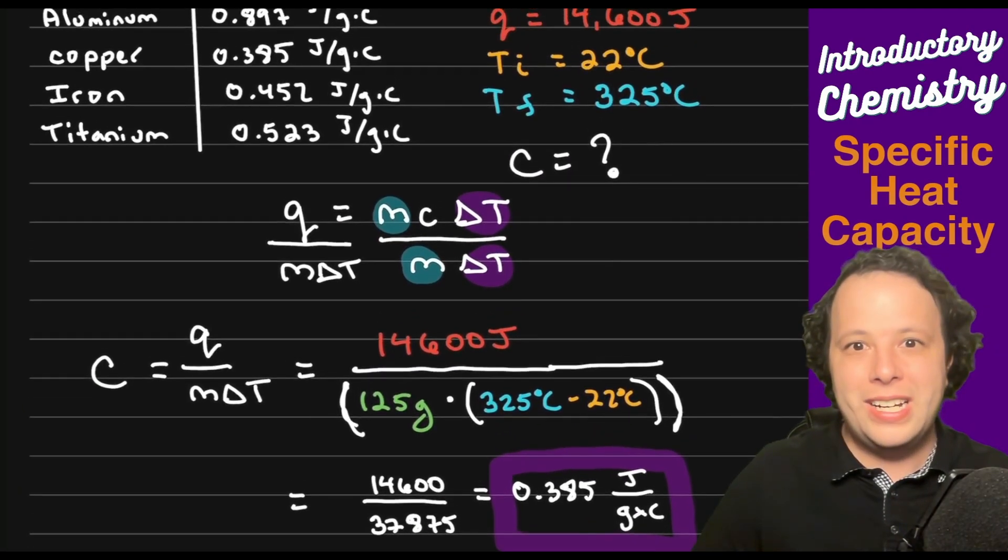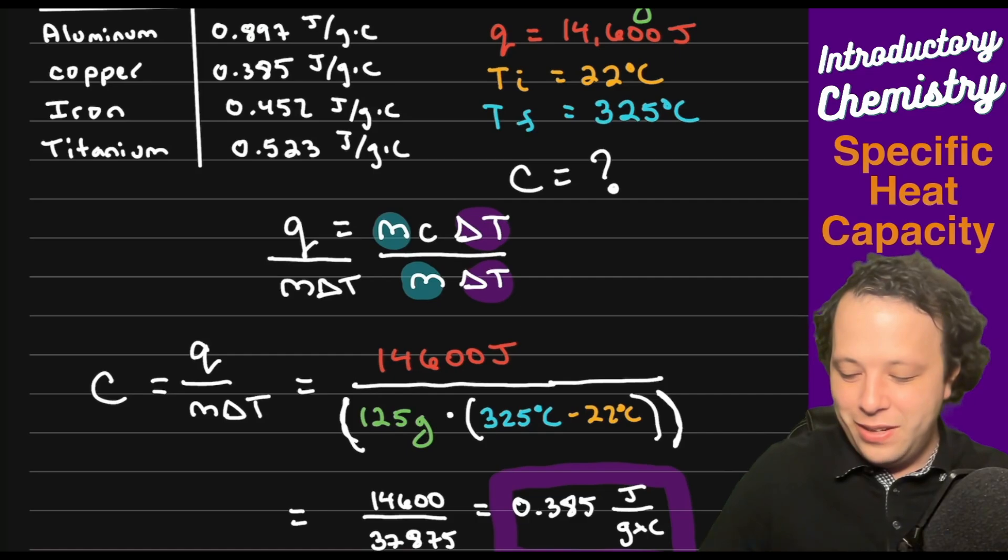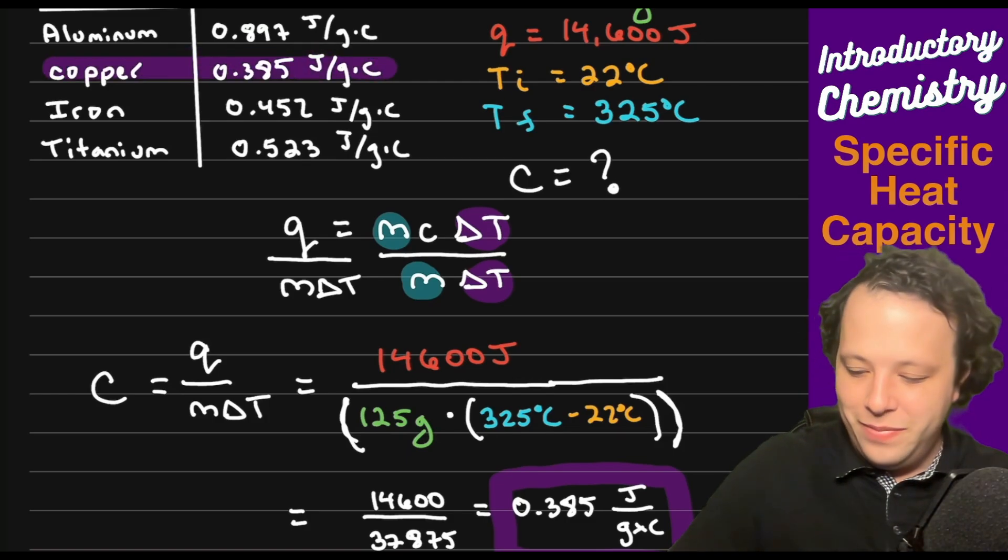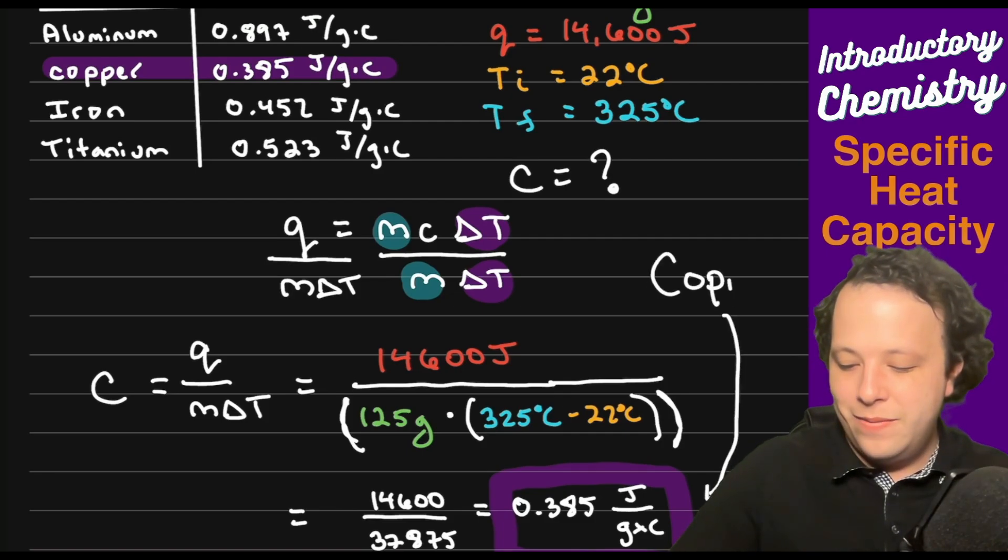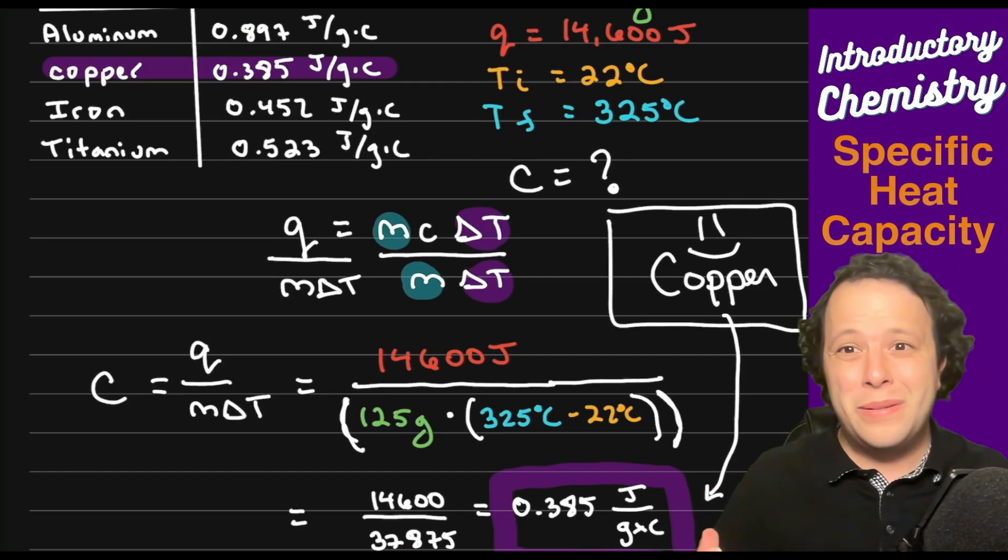When we plug in all these values, we should get 14,600 divided by 37,875 which will give you a final number of 0.385 joules per grams by Celsius. Now what we will do is we'll check it against our chart and what we're going to see is that this value, 0.385, matches what we also have for copper. So our final answer in this case is going to be copper for the identity of our unknown metal.